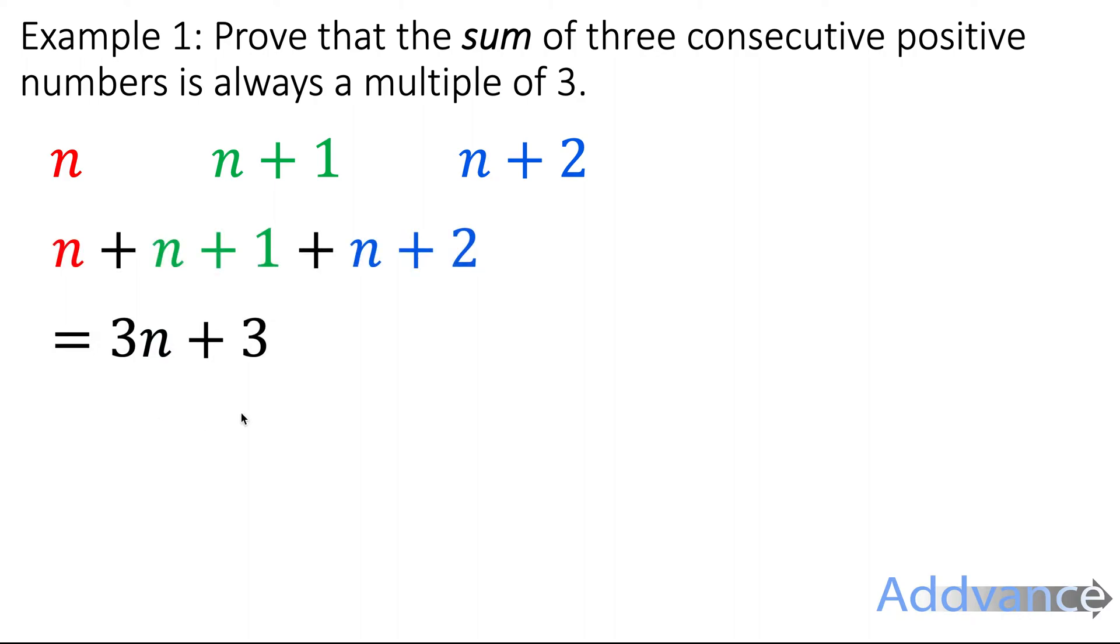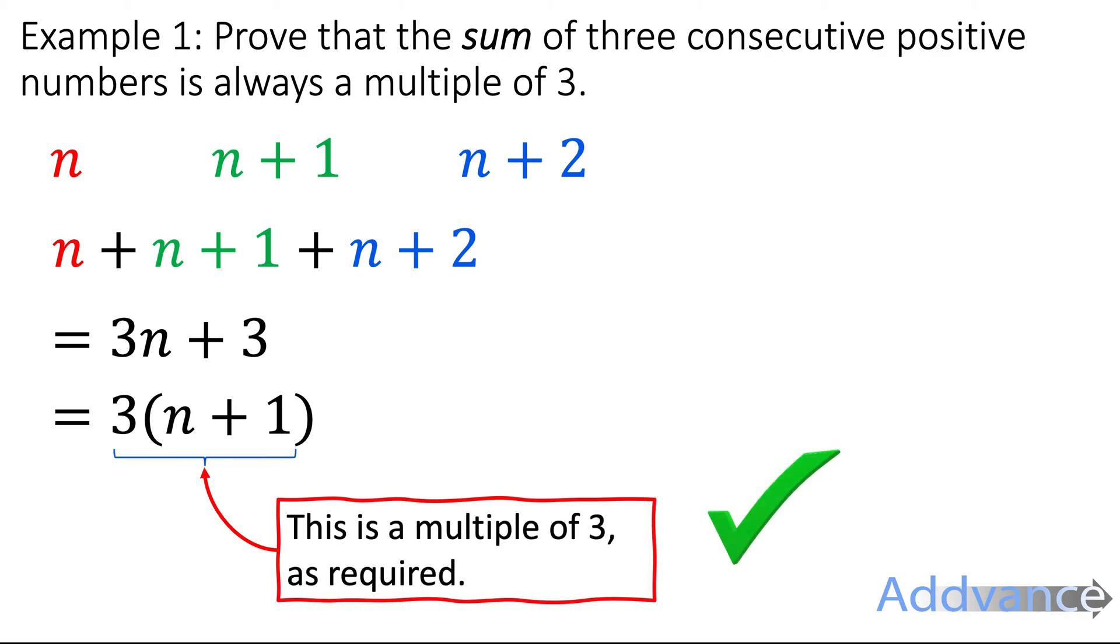Now n plus n plus n plus 1 plus 2 is the same as 3n plus 3. We just simplify that. And if we factorise that, it looks like a multiple of 3. So it's 3 times a number, therefore it must be a multiple of 3 as required. And that is a full proof that this is correct.